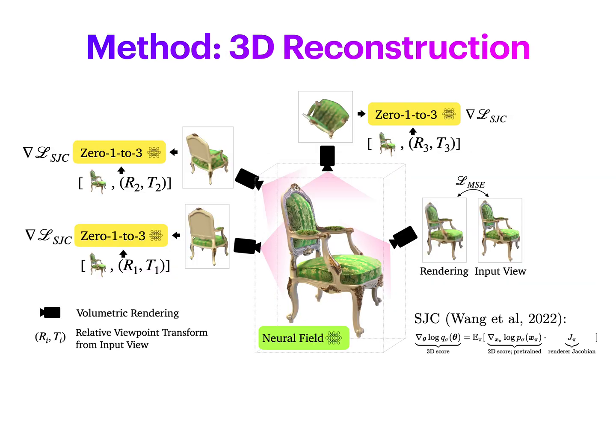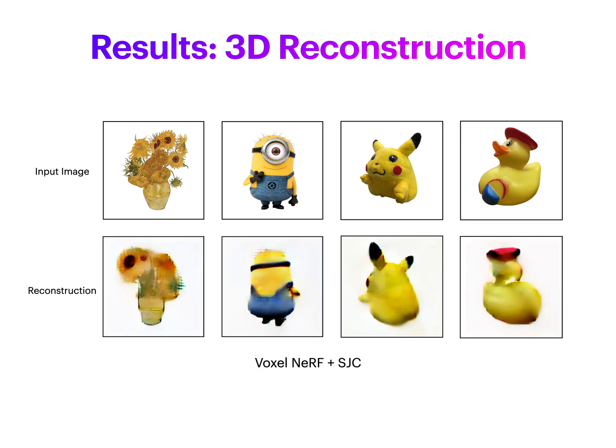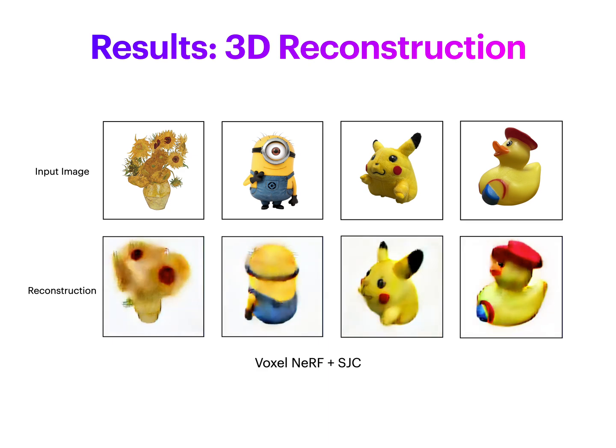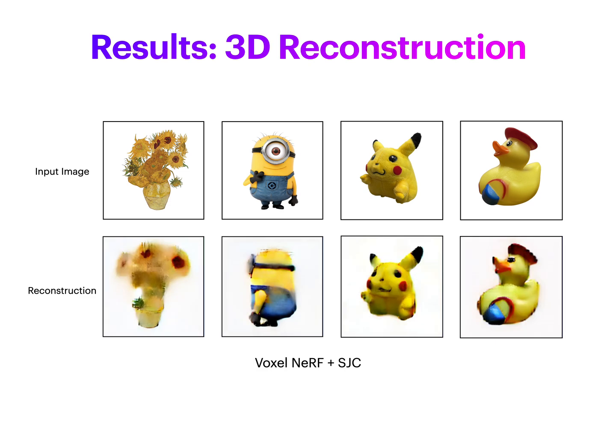To obtain a full 3D reconstruction from the input image, we can plug 0123 into a score distillation framework. With explicit control of relative camera transform, 0123 improves the well-known Janus problem in typical 3D generation methods such as DreamFusion, Magic3D, and Score Jacobian Chaining. After an optimization process, we can obtain a full 3D NeRF reconstruction from just a single input image.